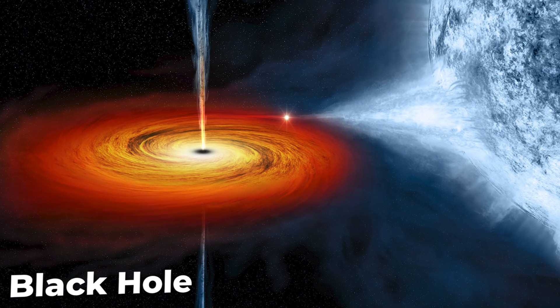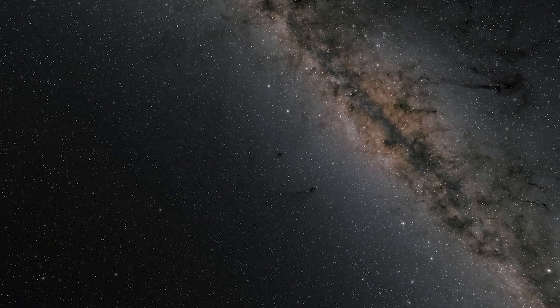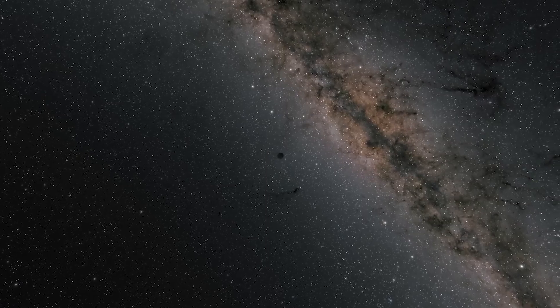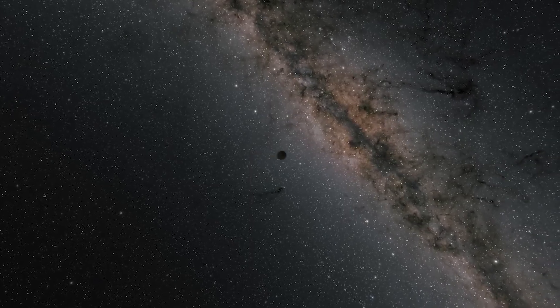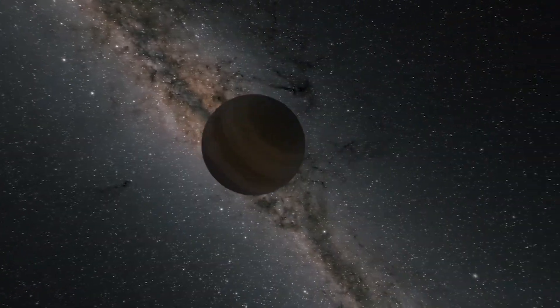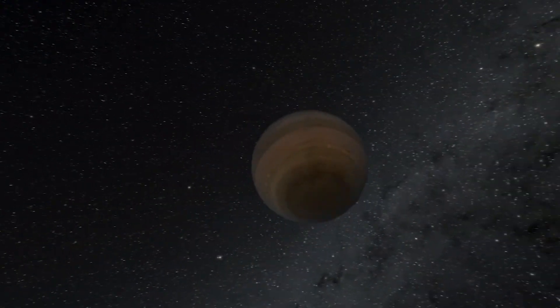Scientists at Harvard University, including Avi Loeb, suggest that Planet 9 might actually be a tiny black hole located somewhere in the Oort Cloud. If Planet 9 turns out to be a black hole, it will likely be approximately the size of a grapefruit, but 5 to 10 times as massive as Earth.